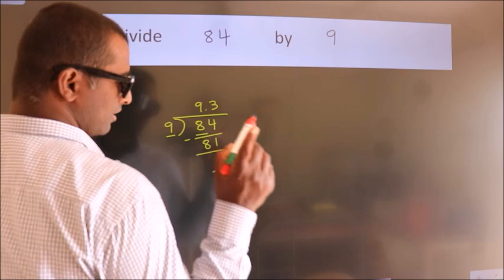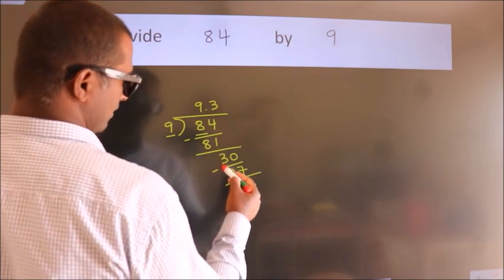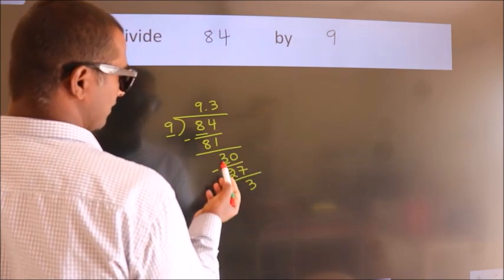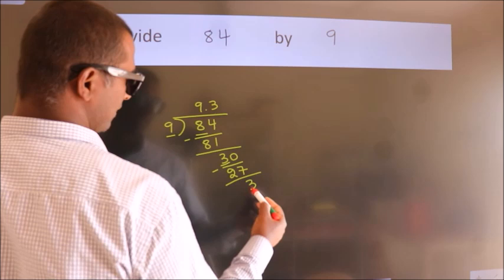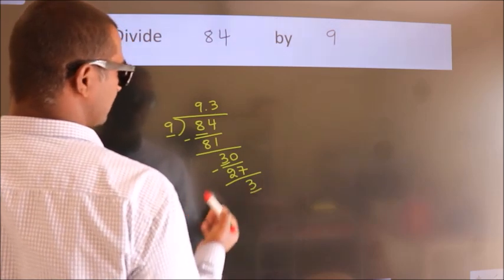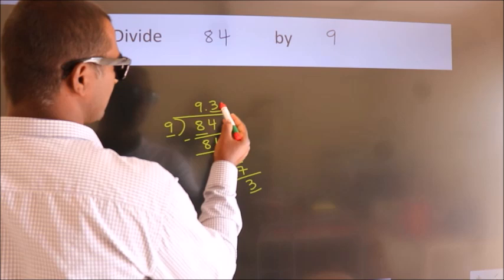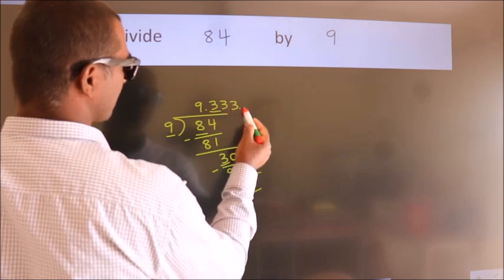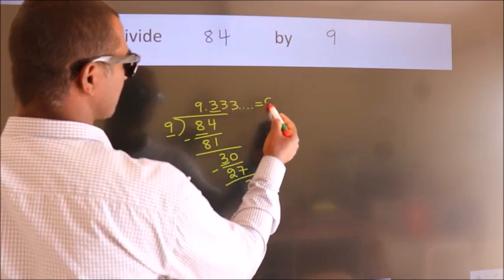Now you observe. We had 3 here and we got 3 again. That means this number keeps on repeating. So this is our quotient.